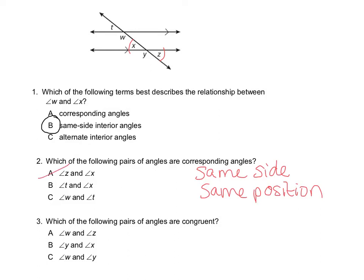B is angle T and angle X. Those are on the same side and same position, so we know that it's B. Angle W and angle T are linear pairs — they make a 180-degree angle, so they cannot be congruent.